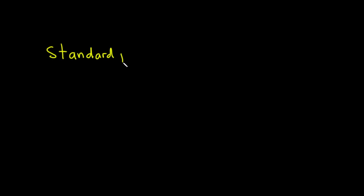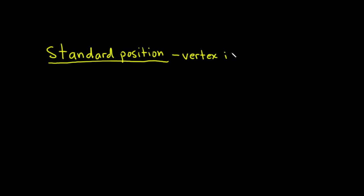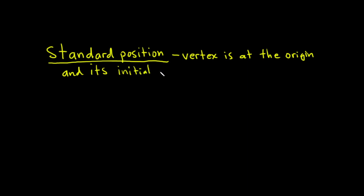Hello, in this video we're going to talk about more special angles. The first type of angle we're going to discuss is an angle in standard position. This is actually a simple concept but it's very, very important to know. We say an angle is in standard position if its vertex is at the origin and its initial side is along the x-axis.